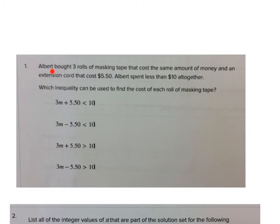The first problem: Albert bought three rolls of masking tape that cost the same amount of money and an extension cord that cost $5.50. Albert spent less than $10 altogether. Which inequality can be used to find the cost of each roll of masking tape? So, three rolls of masking tape that cost the same amount of money, and we're looking for the cost of each roll, so we don't know that. I would say M is going to equal your masking tape, and it's 3M.